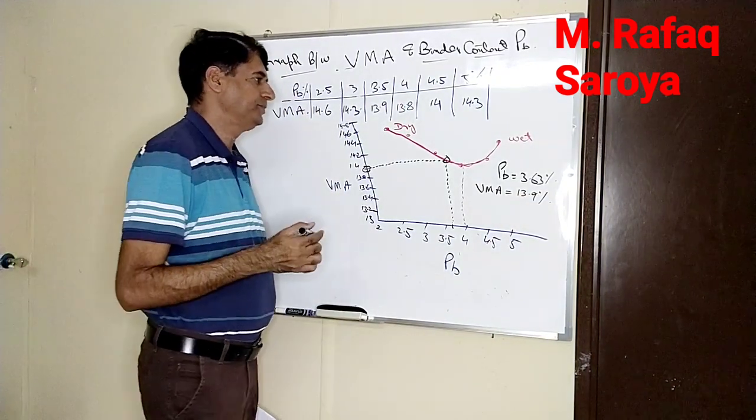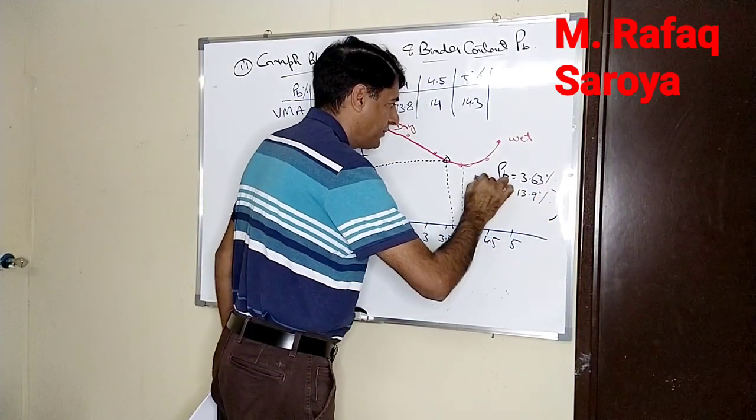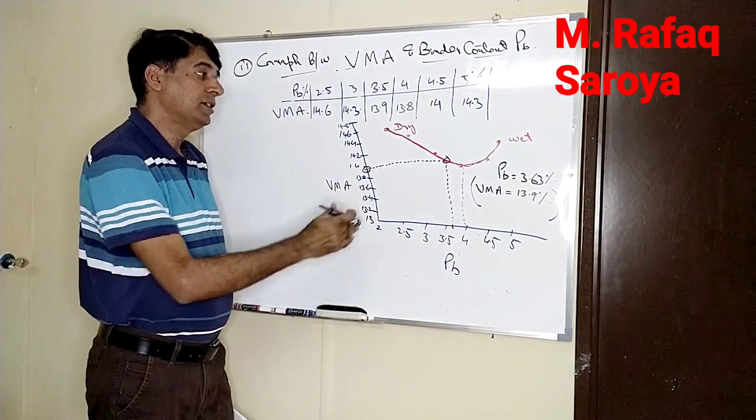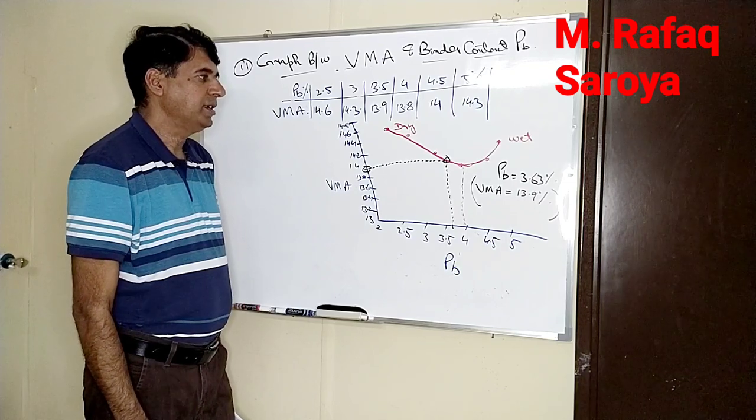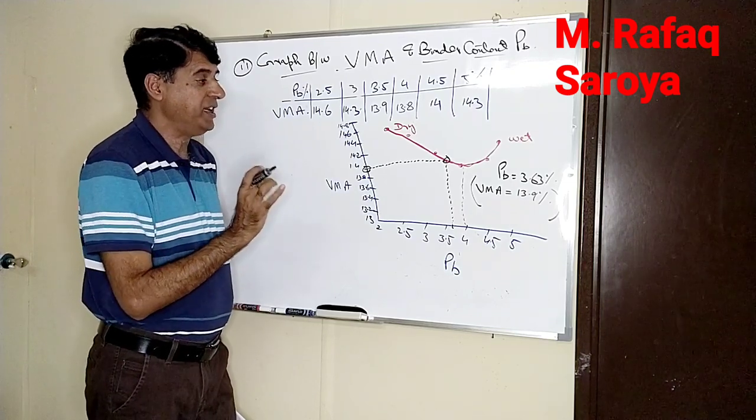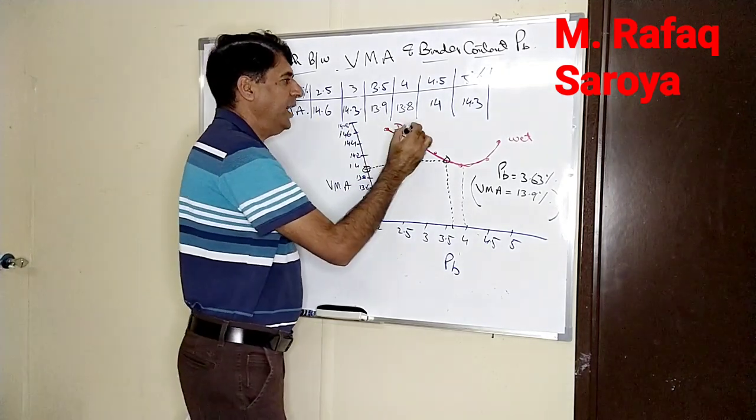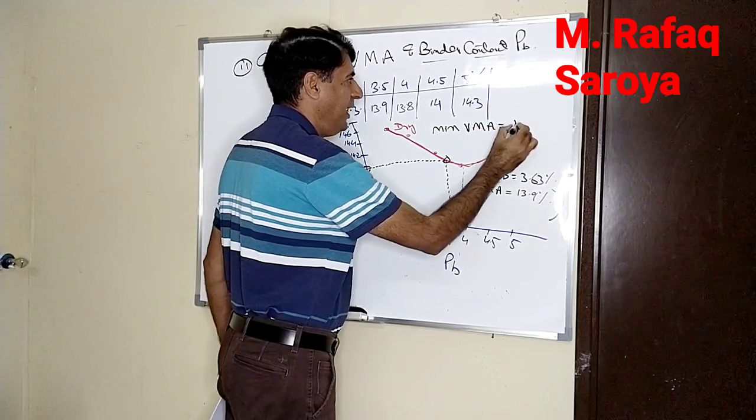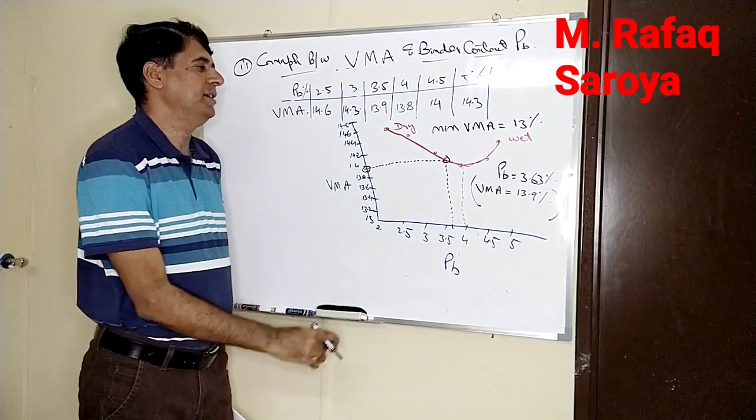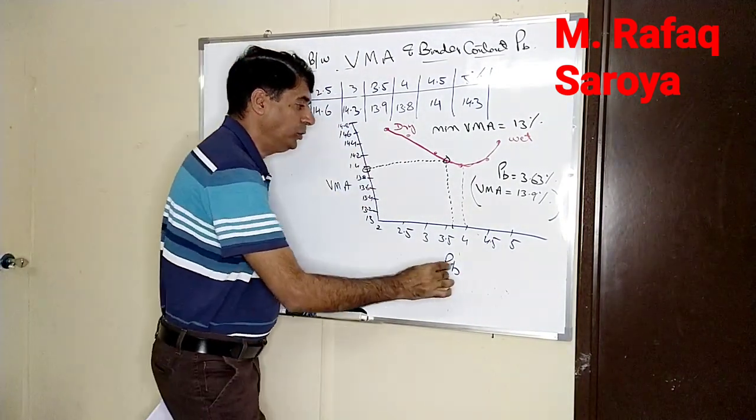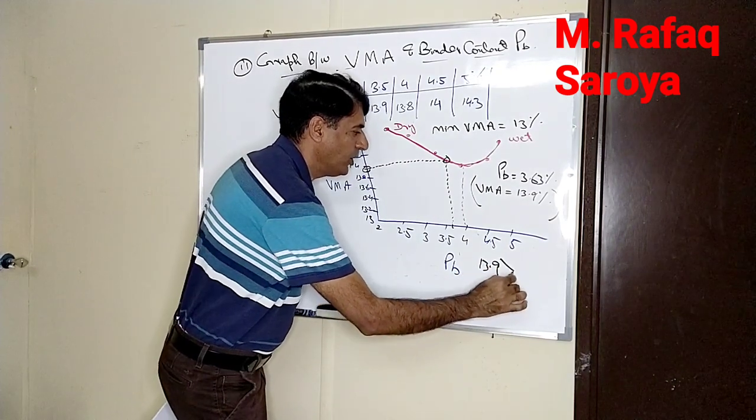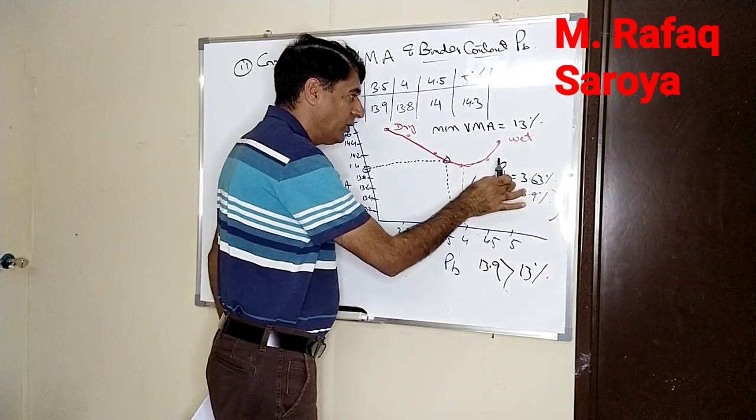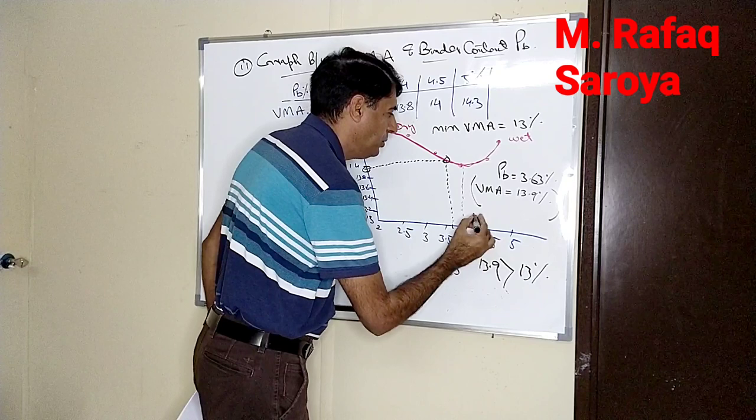But how will I go? Keep one thing in mind: this value should be on the dry side. This is the dry side, so the condition is satisfied. Second, the technical specification has set the minimum value. That minimum value which is required for the VMA to be accepted as a minimum is 13 percent. It means my calculated value 13.9 is greater than 13 percent. So it means with this binder content, the amount of VMA calculated is acceptable.